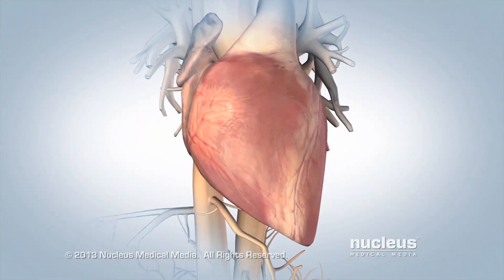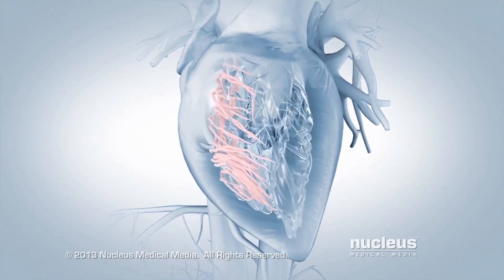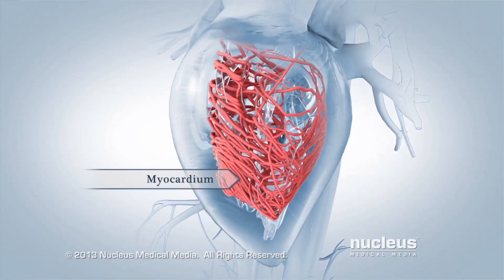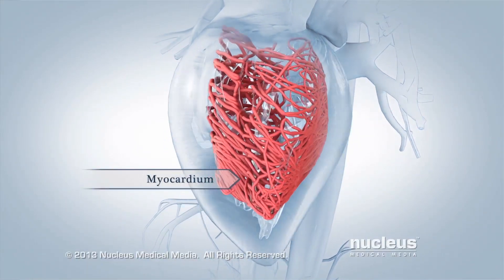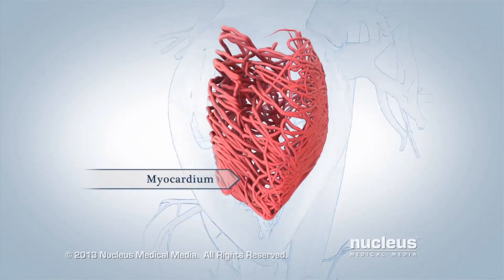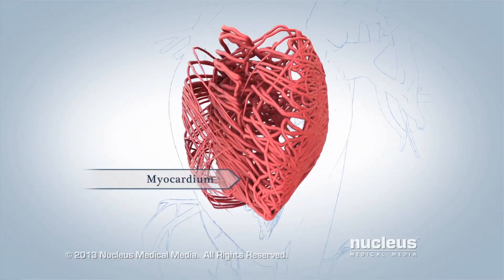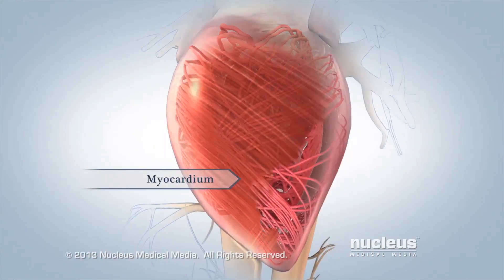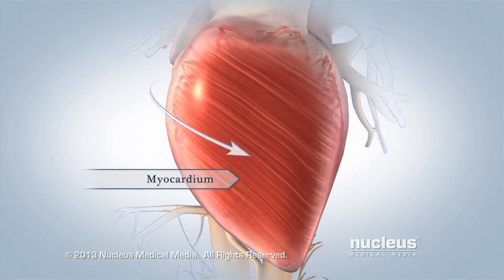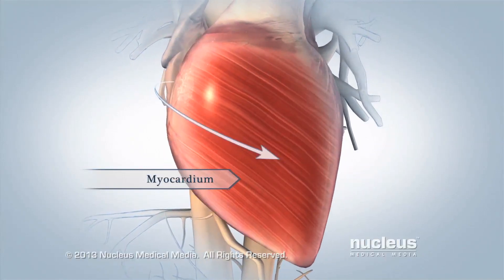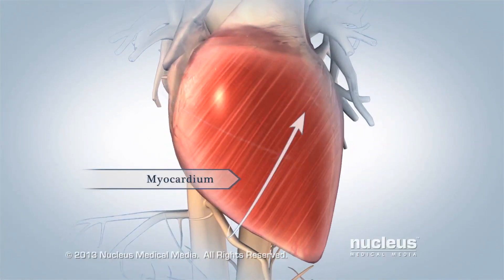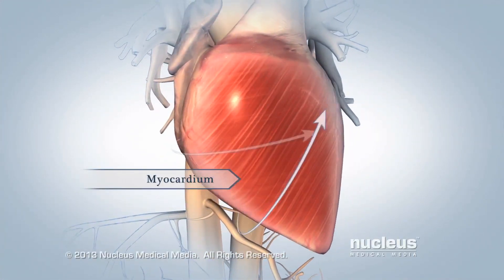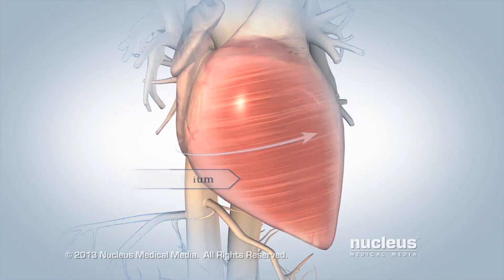In order to pump blood more efficiently, your heart muscle, called myocardium, is arranged in a unique pattern. Three layers of myocardium wrap around the lower part of your heart. They twist and tighten in different directions to push blood through your heart.